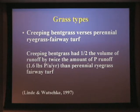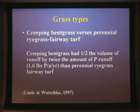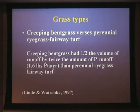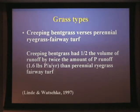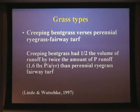We had one study that looked at this. Doug Lindy and Tom Wachke at Penn State looked at the difference between perennial ryegrass and creeping bentgrass under fairway turf and how that changed the hydrology and water quality. They reported that creeping bentgrass, having a very dense canopy compared to perennial ryegrass, saw about half the volume of runoff. But for some reason, creeping bentgrass is more leaky in terms of phosphorus and saw twice the amount of phosphorus in that runoff. Typically when we see less volume of water, we see less transport of any nutrient — this is kind of one of the exceptions.